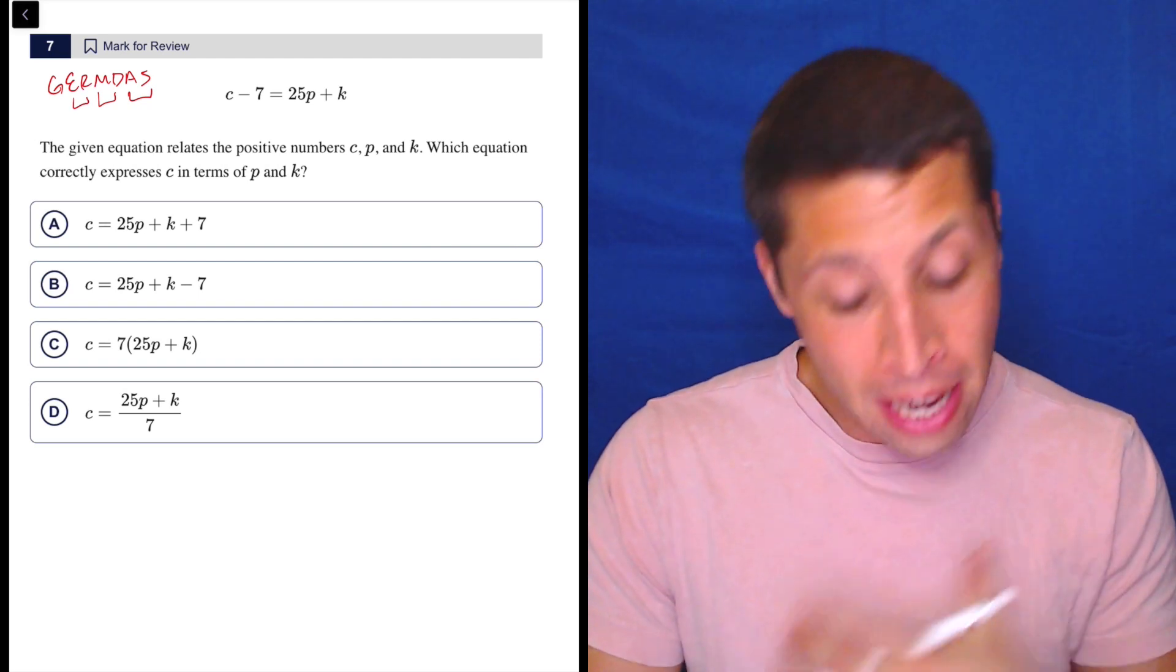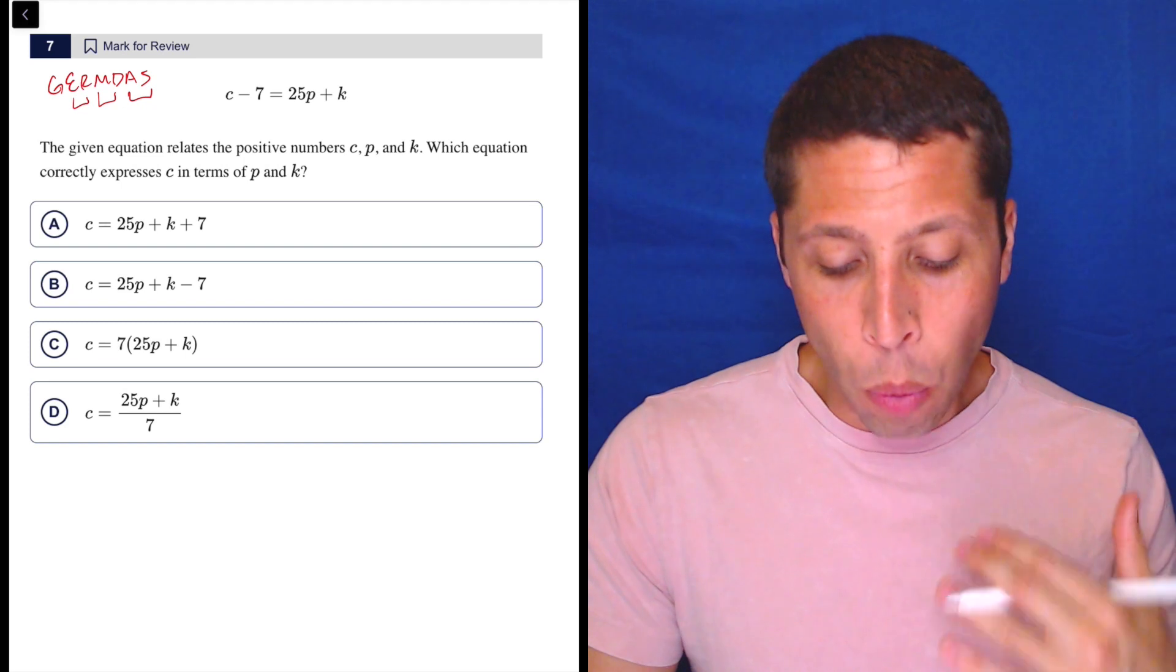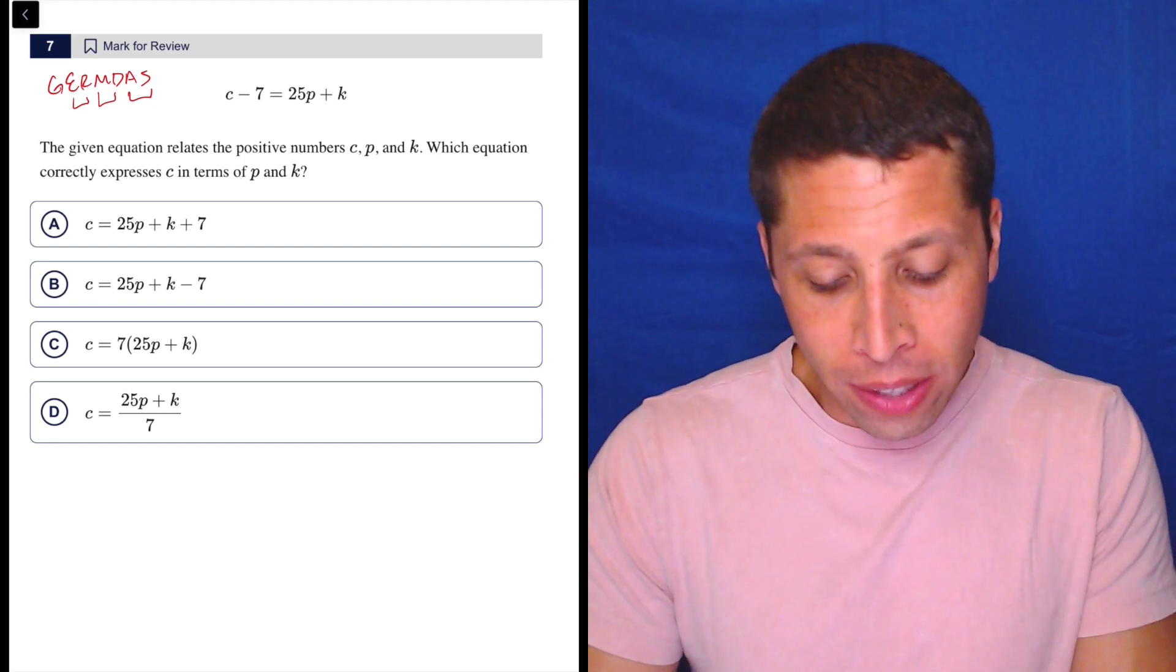The G stands for groupings, but we don't really have any groupings here. There's no parentheses, no radicals or anything like that. So what we need to do is just think, okay, what's attached to the C?